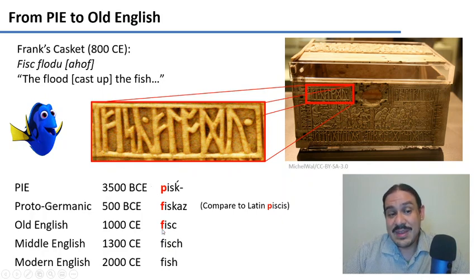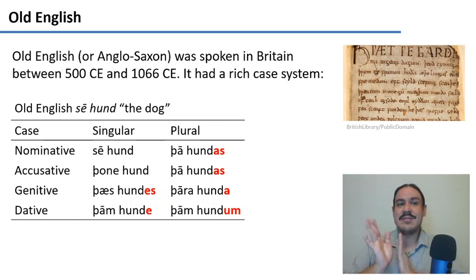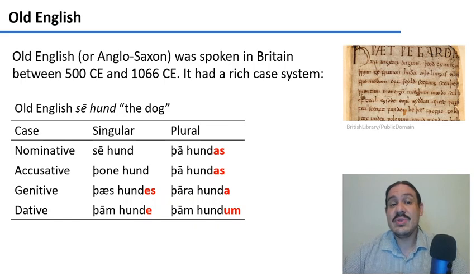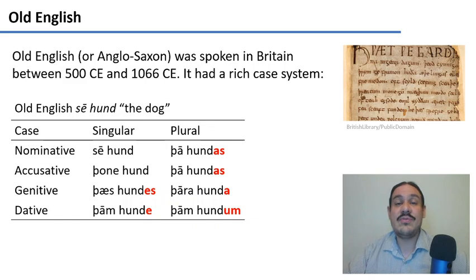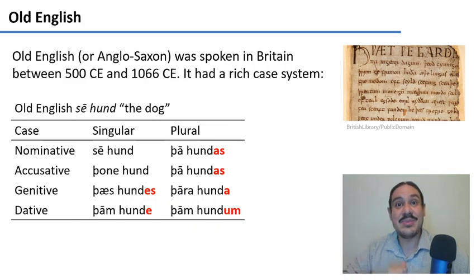'Fisk — the flood cast up the fish.' This runic evidence shows the word was already pronounced with an f about a thousand years ago. Old English was spoken in Britain from around 500–700 CE to about 1066–1100 CE. It had a rich written tradition and a very complex case system — if you've studied German, remember all those cases where you had to match adjectives, articles, and nouns.